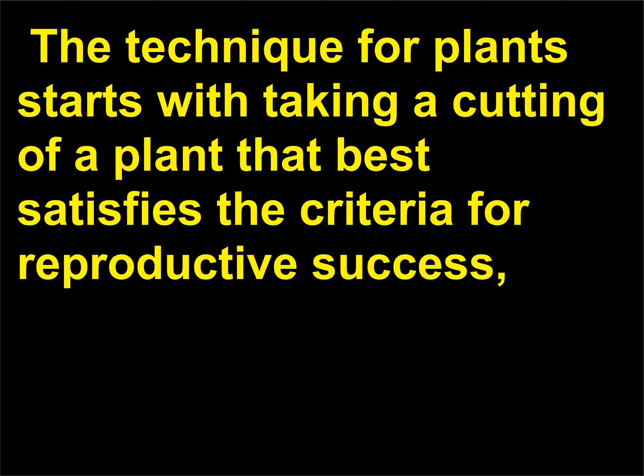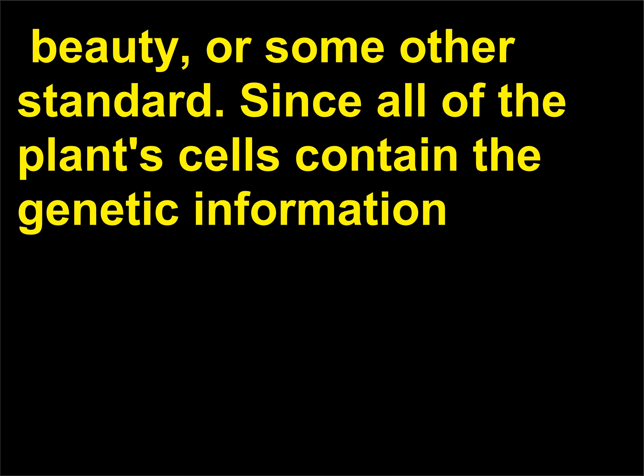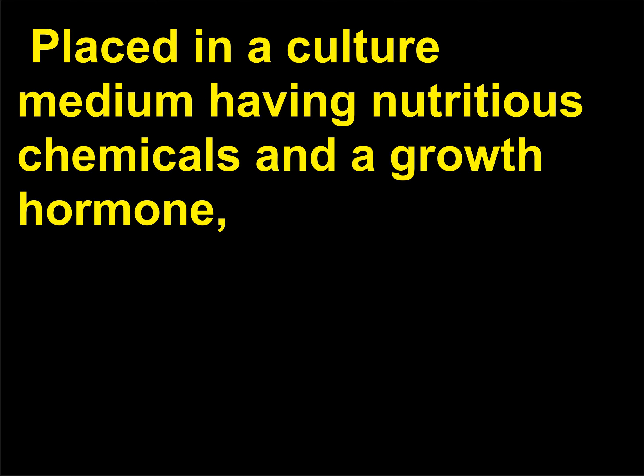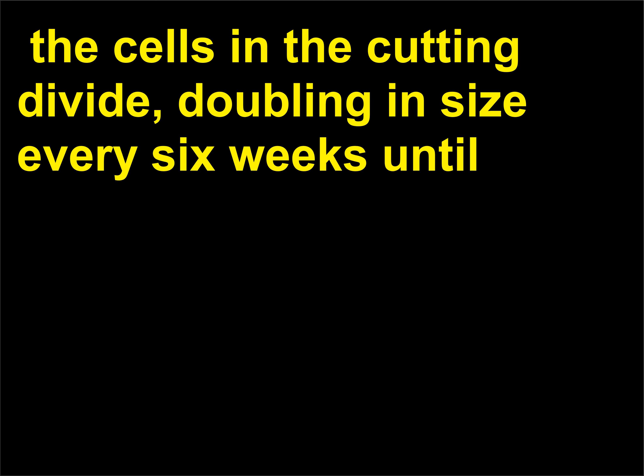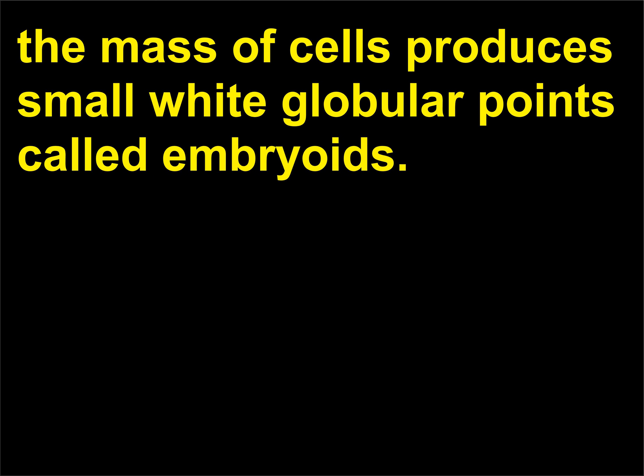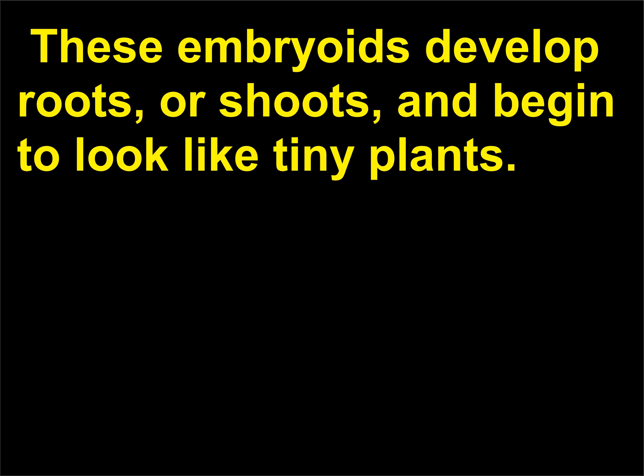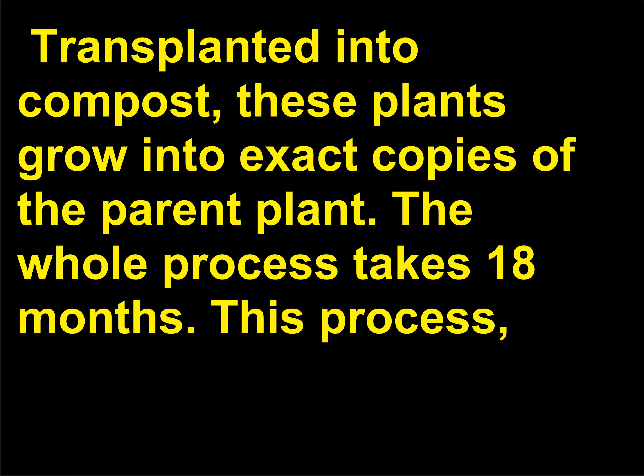The technique for plants starts with taking a cutting of a plant that best satisfies the criteria for reproductive success, beauty, or some other standard. Since all of the plant's cells contain the genetic information from which the entire plant can be reconstructed, the cutting can be taken from any part of the plant. Placed in a culture medium having nutritious chemicals and a growth hormone, the cells in the cutting divide, doubling in size every six weeks until the mass of cells produces small white globular points called embryoids. These embryoids develop roots or shoots and begin to look like tiny plants. Transplanted into compost, these plants grow into exact copies of the parent plant. The whole process takes 18 months.